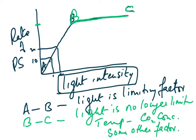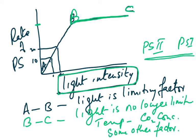To explain why the rate stops increasing: PS2 and PS1 are all being activated — there are no more available. The number of PS2 and PS1 is determined by the number of chloroplasts and thylakoids. All of them are activated, meaning there is enough ATP and NADPH being made, and no more can be produced.